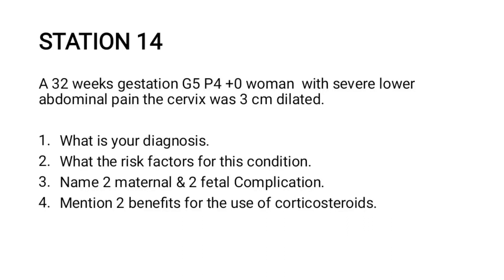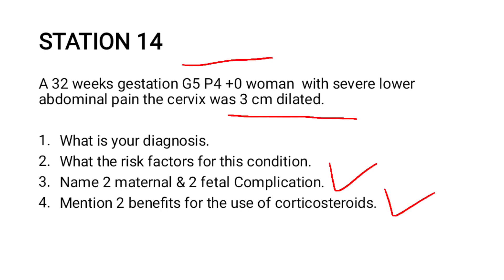Welcome to our case study. The patient is a 32-week gestation G5P4+0 woman presenting with severe lower abdominal pain, and the cervix is 3 centimeters dilated. The questions are: one, what is your diagnosis? Two, what are the risk factors for this condition? Three, name two maternal and two fetal complications. And four, mention two benefits of the use of antenatal corticosteroids.